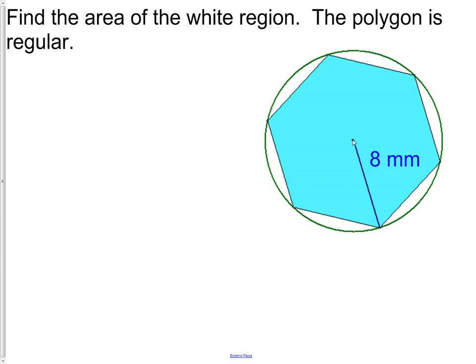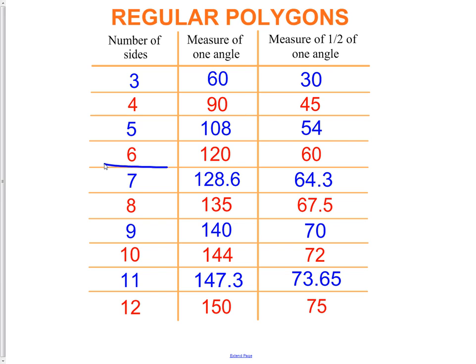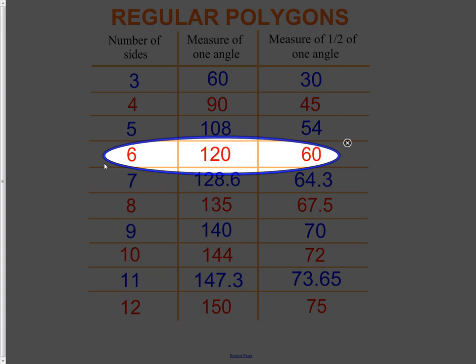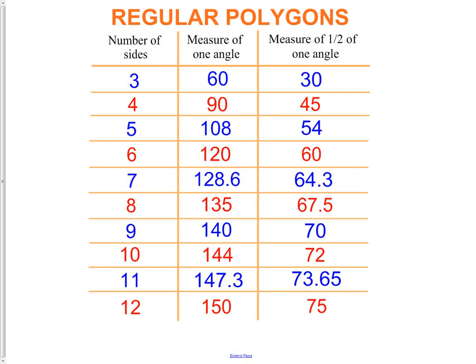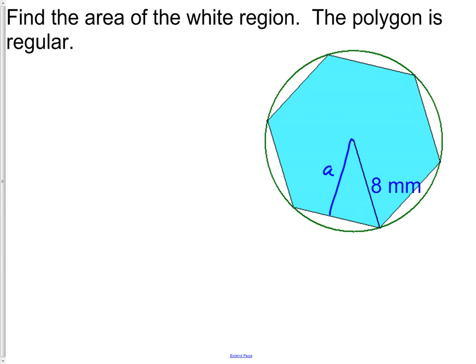We draw in the perpendicular apothem segment. The value 8 is the distance from the center to a vertex of the regular polygon, which is also the radius of the circle. Since this is a six-sided figure, one full interior angle is 120 degrees and half of that is 60 degrees. The apothem meets the side at a right angle, so the top angle is 30 degrees — giving us a 30-60-90 triangle.